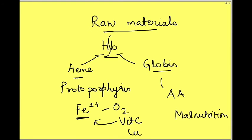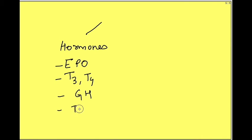So if we summarize what are the factors which are required for RBC production. There are certain hormones. So it includes erythropoietin, thyroid hormones, then growth hormone and testosterone.